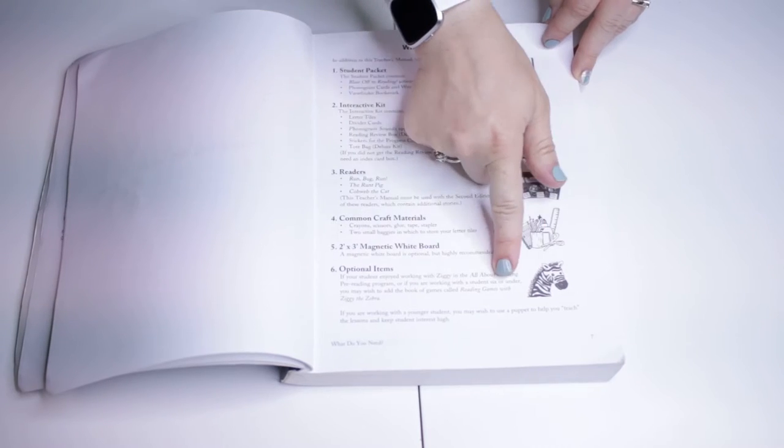And an optional item is an additional book that you can purchase on their website for more activities. We skipped this, you do not have to get that.